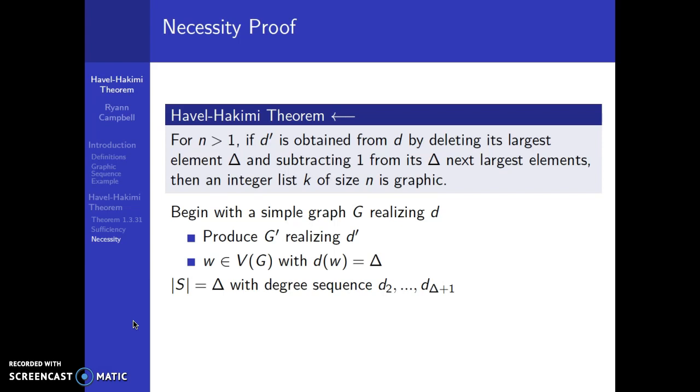And that degree sequence for S is going to be d2 all the way through d(Δ+1). So there are Δ of those vertices, Δ degrees in there. If the neighborhood of w is the same as the set S, we just delete w from G and we obtain G'. So then our theorem has been proven.